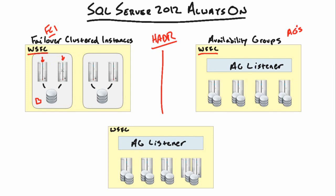Only one node in the cluster will own the resource group at a time; the other node will be inactive, simply on standby. If our primary active node goes down for any reason, the cluster will recognize it through its quorum mechanism and bring up all the services, making the standby node the new owner of the resource group.